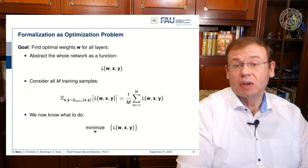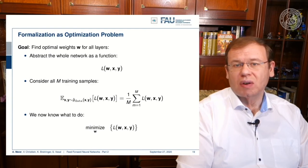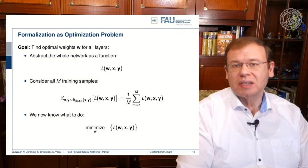We have to consider all M training samples and this allows us to describe some kind of loss. So if we do this we compute the expected value of the loss which is essentially the sum overall of the observations.